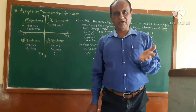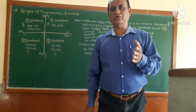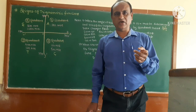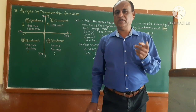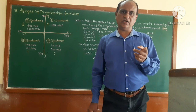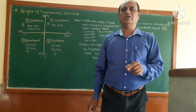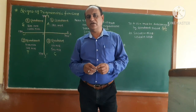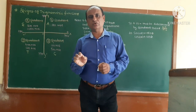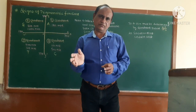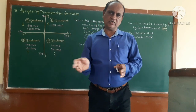The remaining four trigonometric functions in the second quadrant are negative. That means tan is negative, cot is negative, cos is negative, and sec is negative. So in the second quadrant, sine and cosec are positive, and the remaining four trigonometric functions are negative.